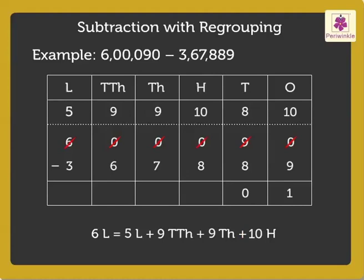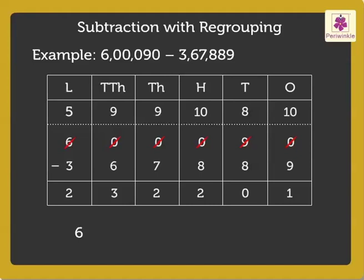Subtract the hundreds, that is 10 minus 8 is equal to 2. Subtract the thousands, that is 9 minus 7 is equal to 2. Subtract the ten thousands, that is 9 minus 6 is equal to 3. Lastly, subtract the lakhs, i.e. 5 minus 3 is equal to 2. So, we get 6 lakhs 90 minus 3 lakhs 67,889 is equal to 2 lakhs 32,201.